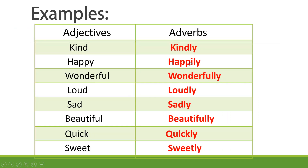By adding '-ly' to adjectives, we create adverbs: kind → kindly, happy → happily, wonderful → wonderfully, loud → loudly, sad → sadly, beautiful → beautifully, quick → quickly, sweet → sweetly. These words are called adverbs of manner.